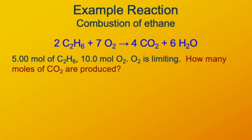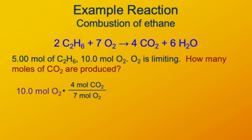In the same situation — 5 moles of C₂H₆ and 10 moles of oxygen, with oxygen limiting — how many moles of carbon dioxide are produced? That's going to be based on the moles of oxygen present to begin with, so we have 10 moles of oxygen. Our proportion is 4 moles of CO₂ for every 7 moles of O₂, so that's our conversion factor. The moles of O₂ cancel out and we're left with moles of CO₂, giving us 5.71 moles of CO₂ produced when excess ethane is combusted in the presence of 10 moles of oxygen.